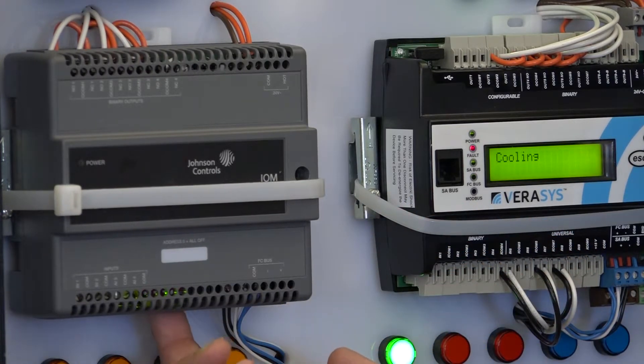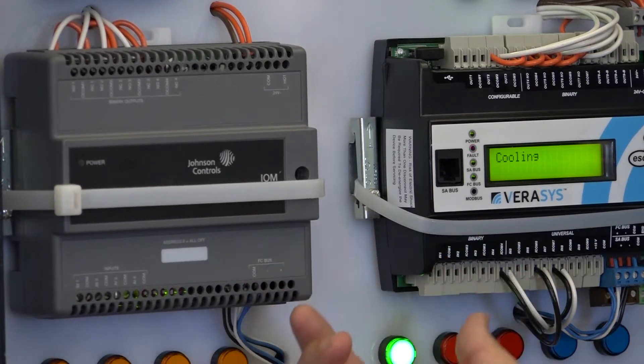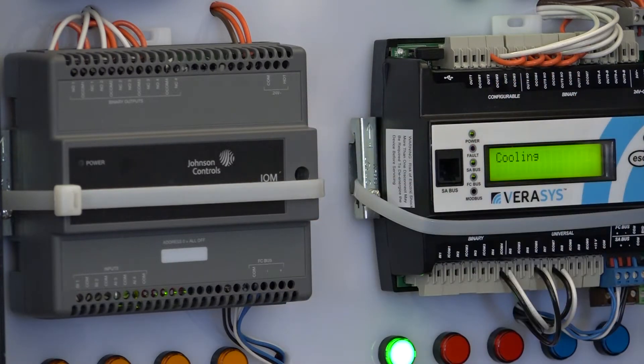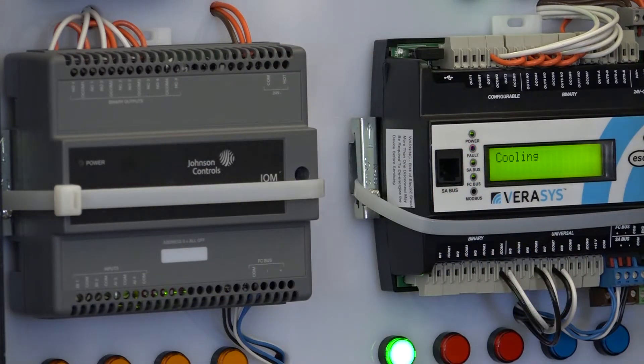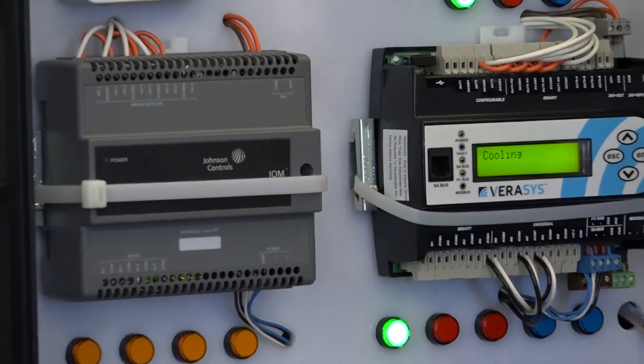Underneath the covers here is where the dip switches are for setting the address. We can have up to 100 devices on a system bus, so we could have up to 100 IOMs. Unlikely you're going to have that, but we could.